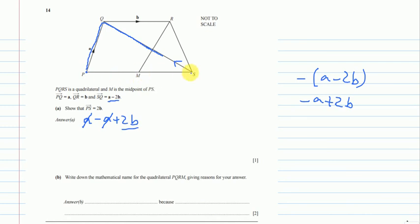M is the midpoint. So it means if this was 2B, then from P to M is just B. So this is also B. So this is B, this is B, it means it's parallel sides. So two parallel sides we know, and we are not still sure about P to Q and R to M.